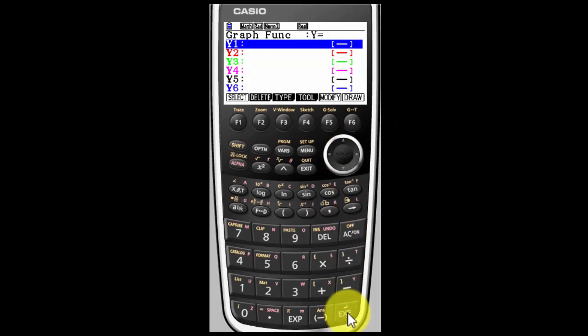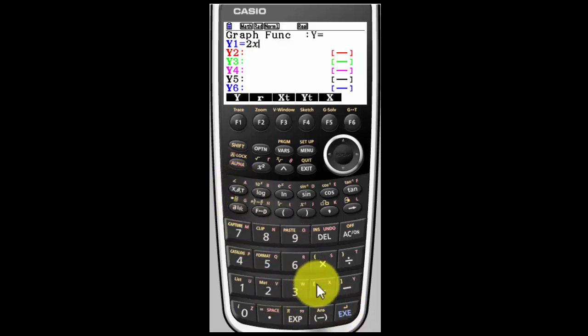So here's where you put in your function. I'm going to put in the function 2x plus 4. Now I need to tell the calculator that I'm done with that function so I hit Execute.